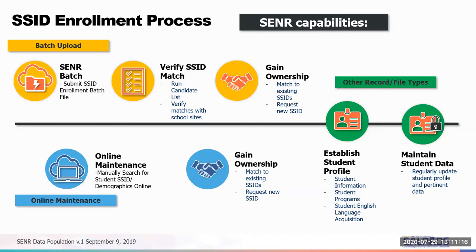Here is a summary of the enrollment process, with batch file submission at the top and online maintenance at the bottom. You start by submitting batch files, then verify and match students and SSIDs or request new SSIDs for students who have no demographic match. Once you claim existing records or obtain new SSIDs, you gain ownership of those students and establish a student profile. Ownership allows you to submit subsequent student records like student information, programs, and English language acquisition, and you must continually maintain student data with regular updates.